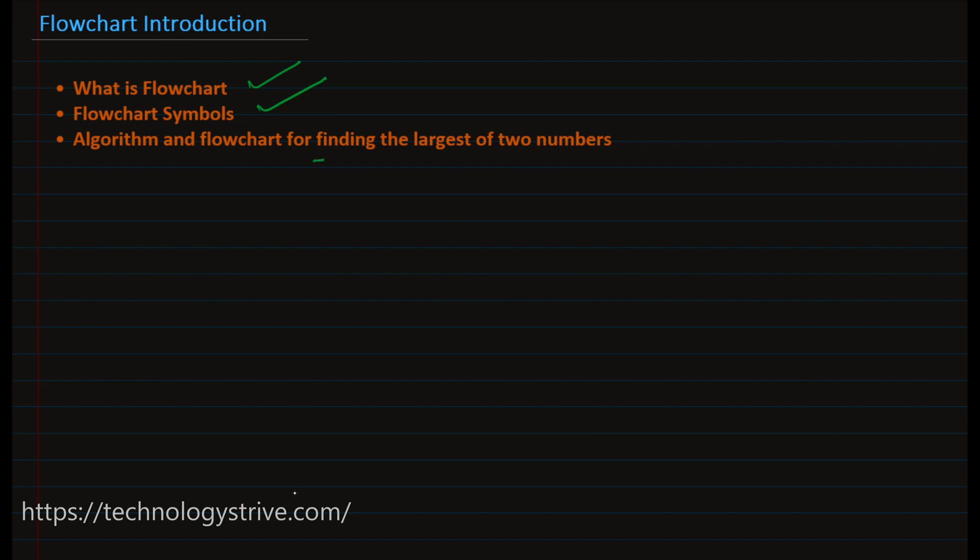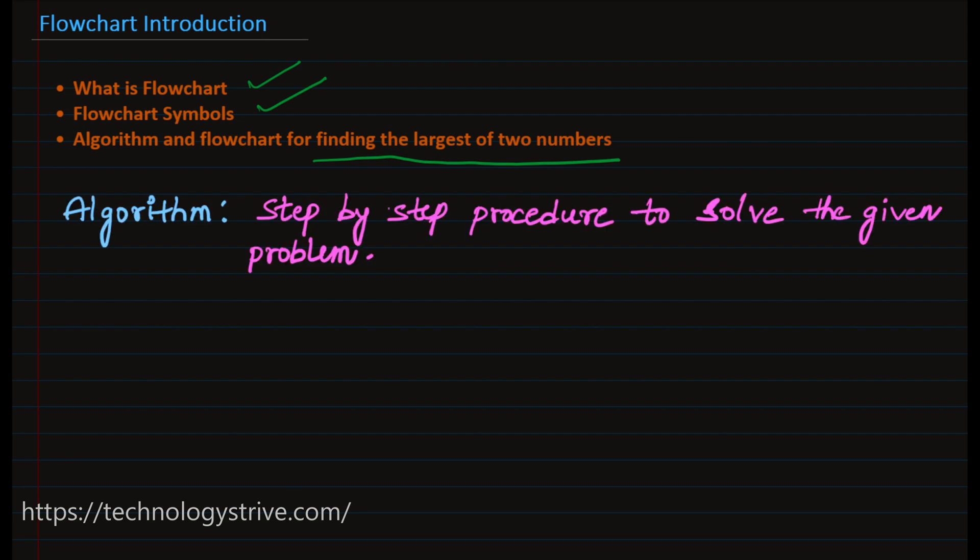The problem which I picked is finding the largest of two numbers. We already know that algorithm is a step-by-step procedure to solve the problem. For a particular problem, the problem can be simple or complex. For simple problems, there can be some 10 steps. In case of complex problems, it can have more than 1000 steps also.